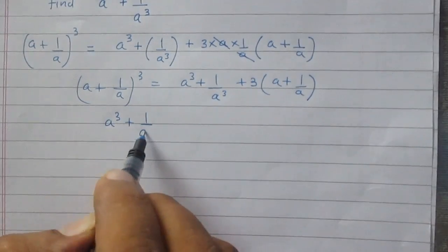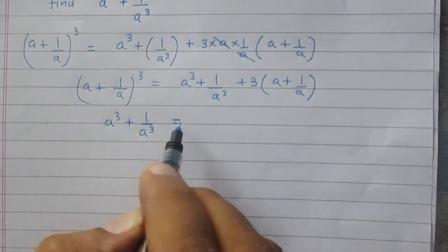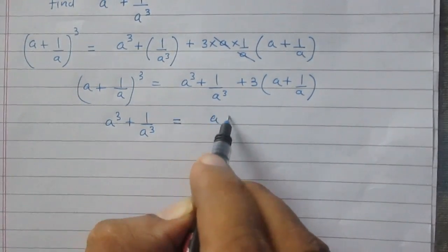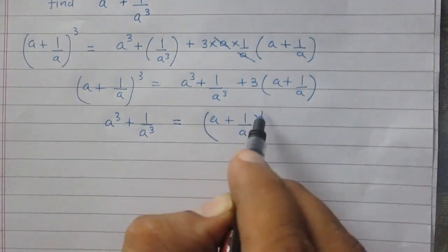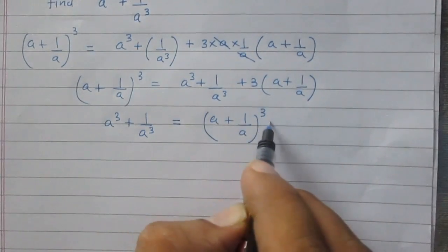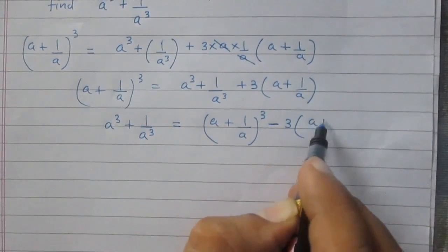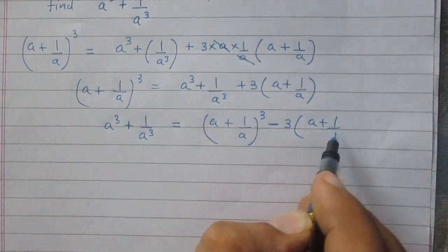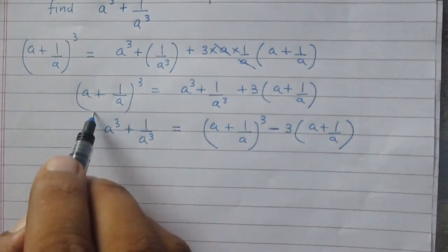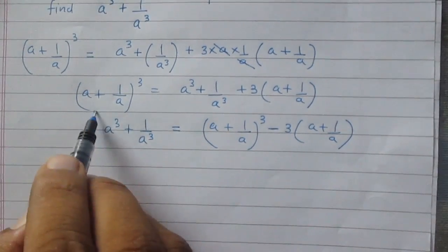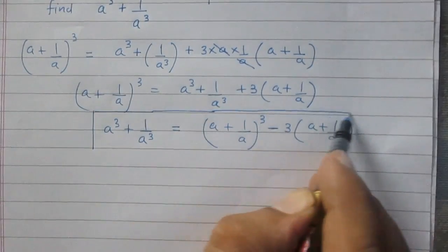You can rewrite it as: a cube plus 1 by a cube is equal to a plus 1 upon a whole cube minus thrice of a plus 1 by a. Now we can find the value of a cube plus 1 by a cube.